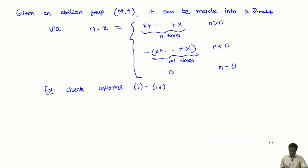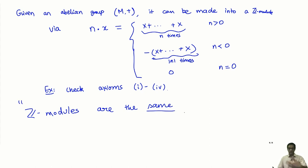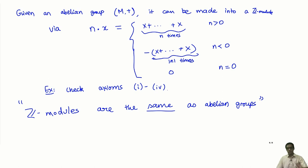So what we have shown is that Z-modules are the same as Abelian groups: given a Z-module I can look at the underlying Abelian group, and given any Abelian group I can make it into a Z-module in this manner. This is our first example of a module which is not a vector space. Next time we will look at another example, slightly more non-trivial than this one.